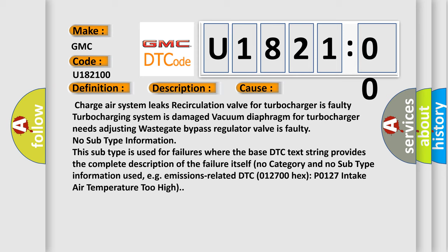No subtype information. This subtype is used for failures where the base DTC text string provides the complete description of the failure itself, no category and no subtype information used. For example, emissions-related DTC 012700 hex, P0127 intake air temperature too high.